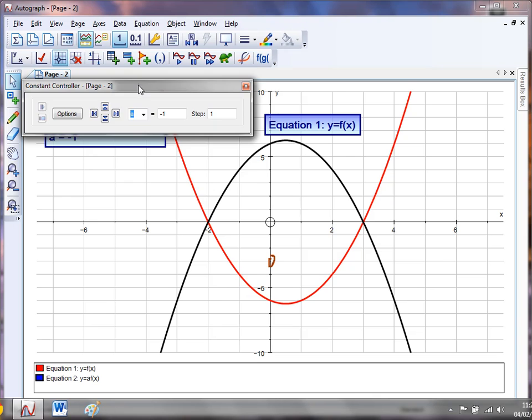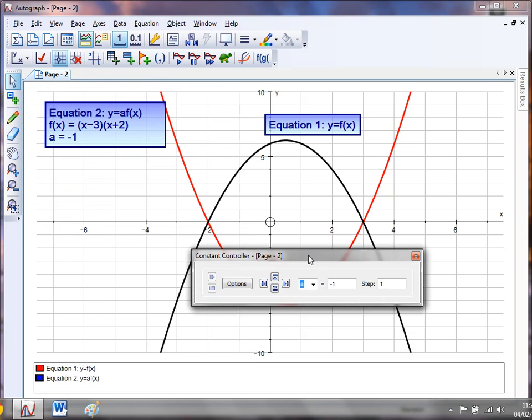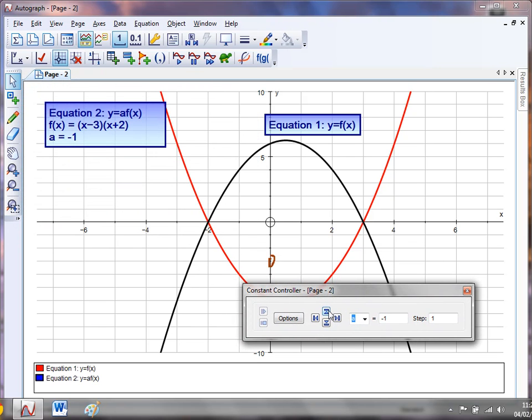As we looked at last week, if I get the constant controller on the go, I can get the students to predict what's going to happen as I increase and decrease the value of a. Better than that though, you don't have to restrict yourself to a single function.